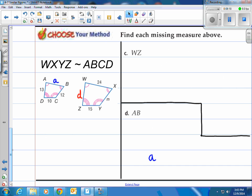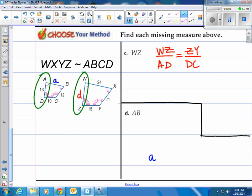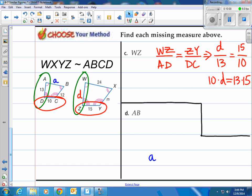How about you give it a shot here with WZ and AB. With WZ, here's what we do first. We know that WZ relates to AD. We're going to use ZY and DC because those have the numbers there. So notice I plug those in pieces of information that I have D in there for WZ. So D over 13 is equal to 15 over 10.